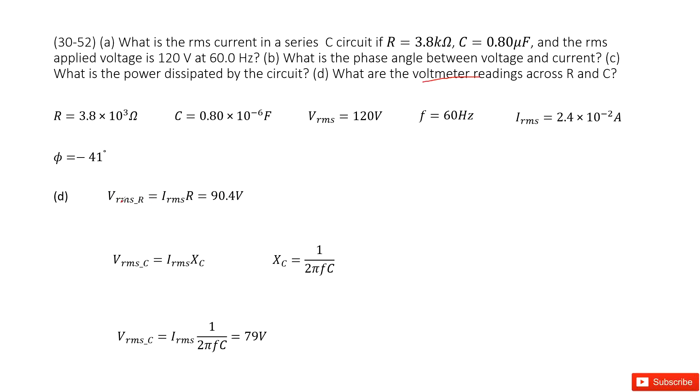So it looks like we need to find root mean squared voltages for R, root mean squared voltages for C. So very straightforward. The root mean squared voltage for R uses the current root mean squared times R. R is resistance. So you get answer there.